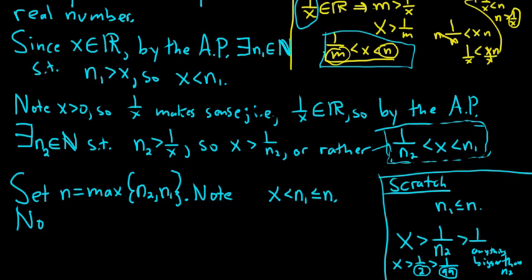So note, n is also greater than or equal to n2, because n is the maximum of these two. So that means that 1 over n2 is greater than or equal to 1 over n.